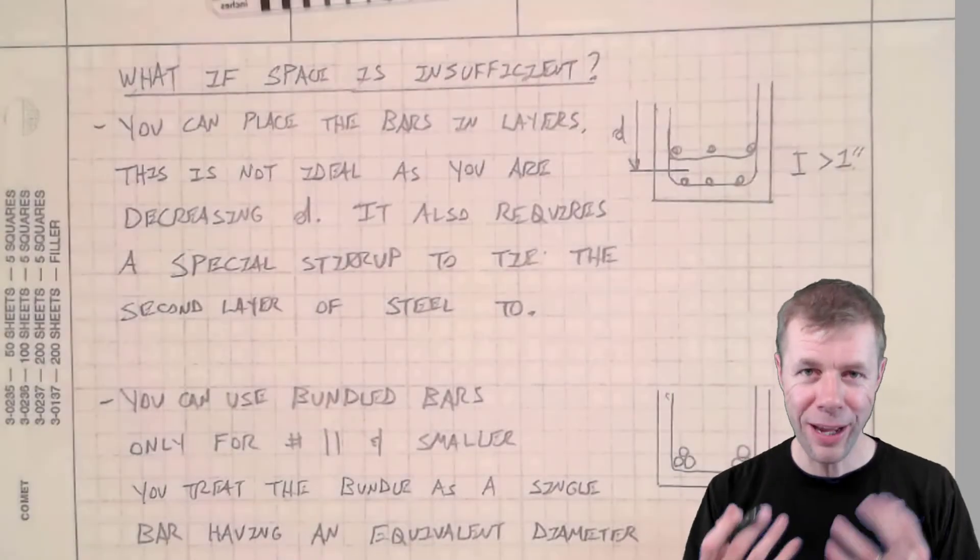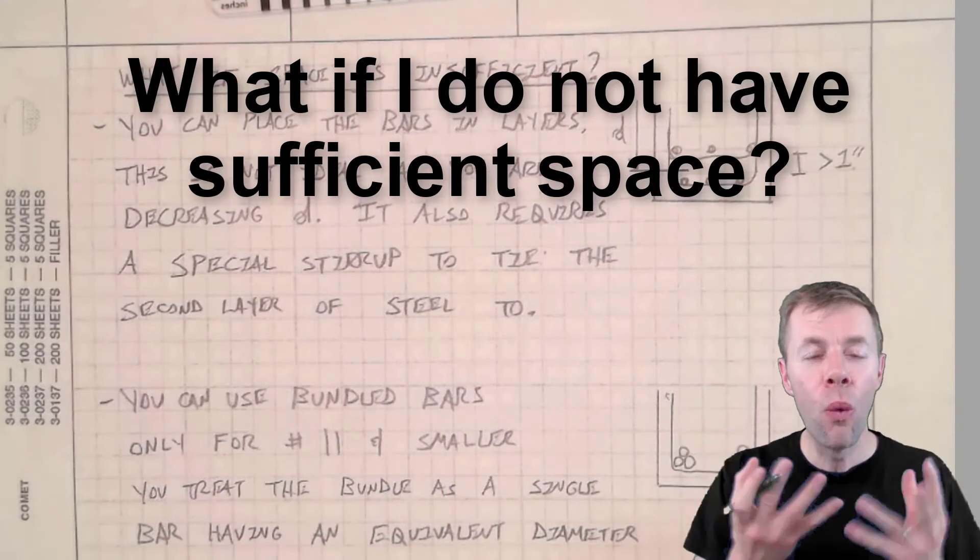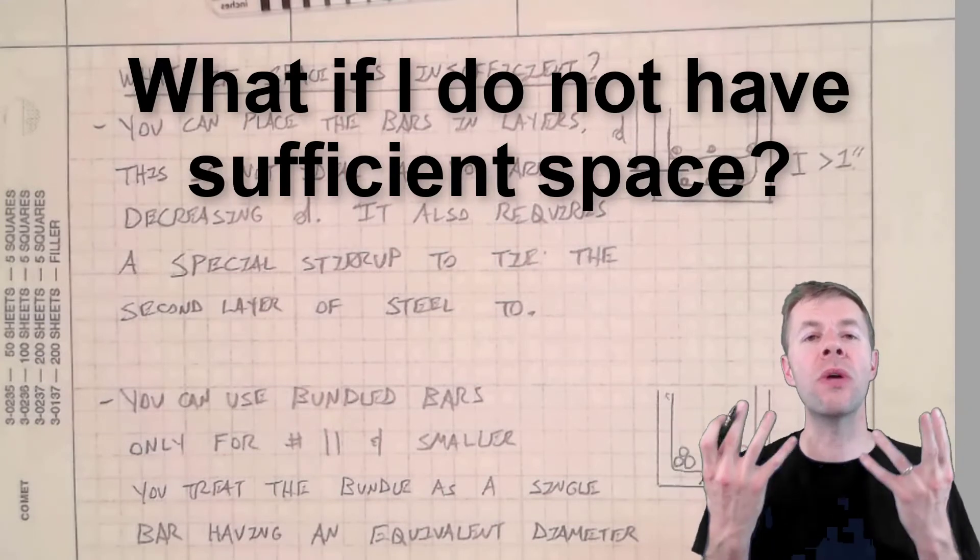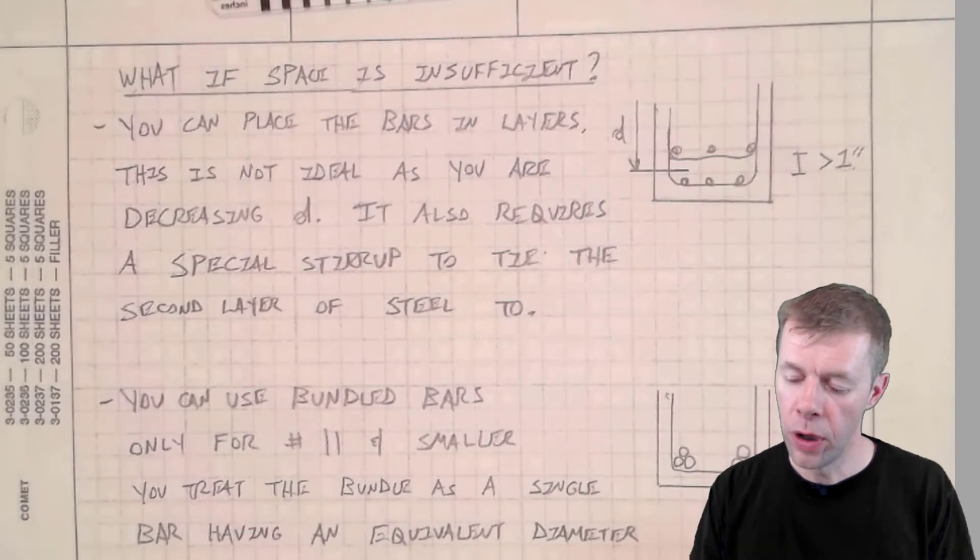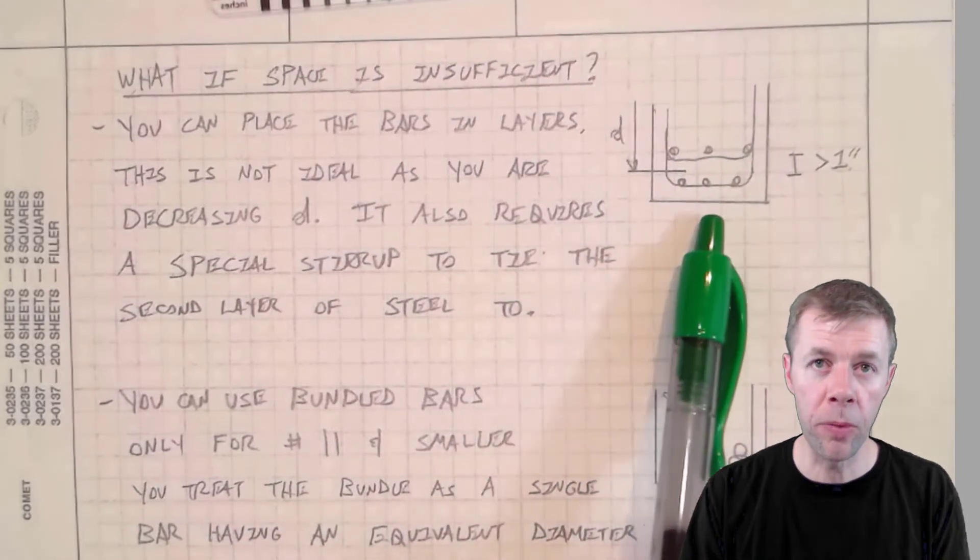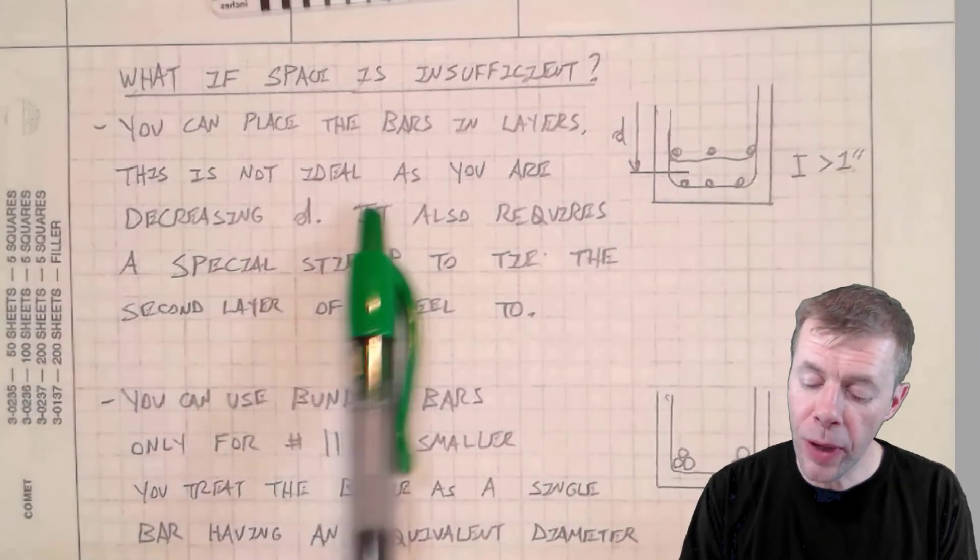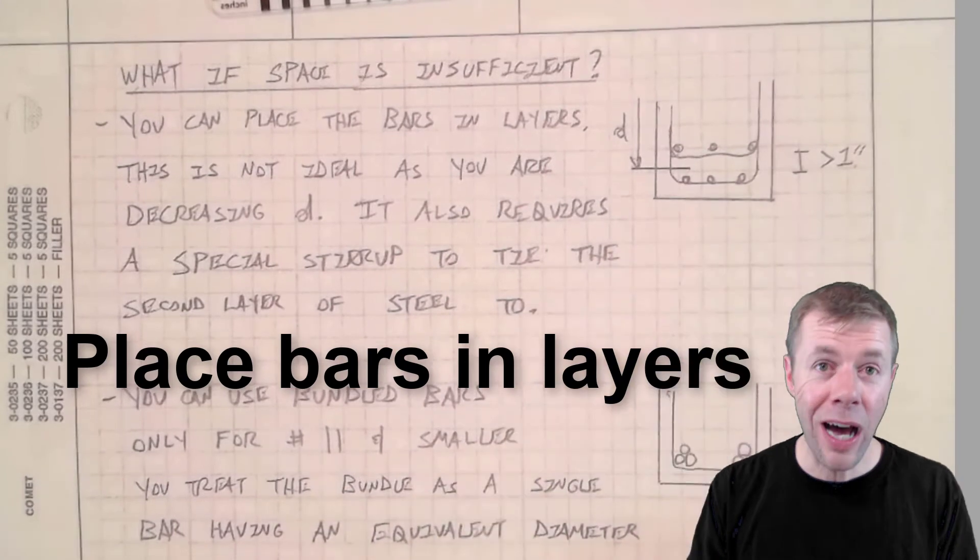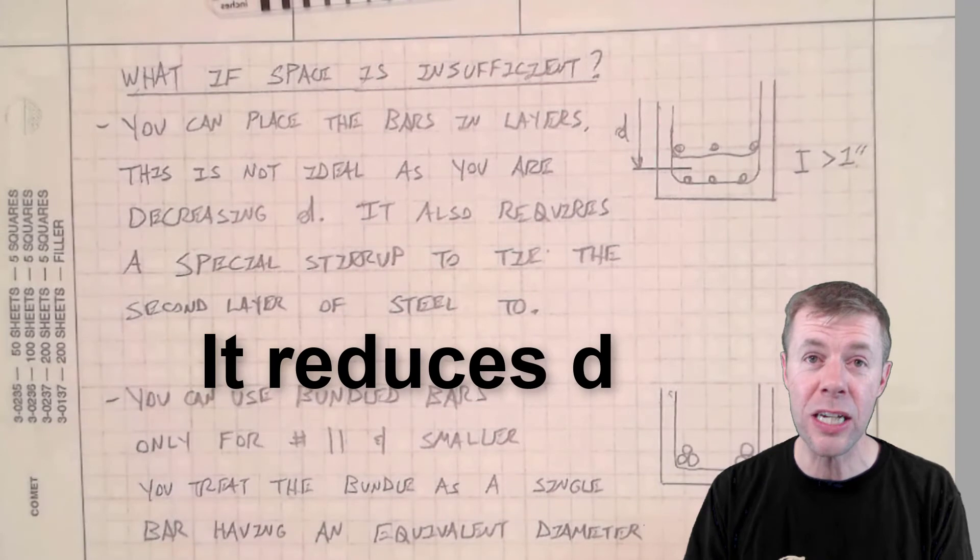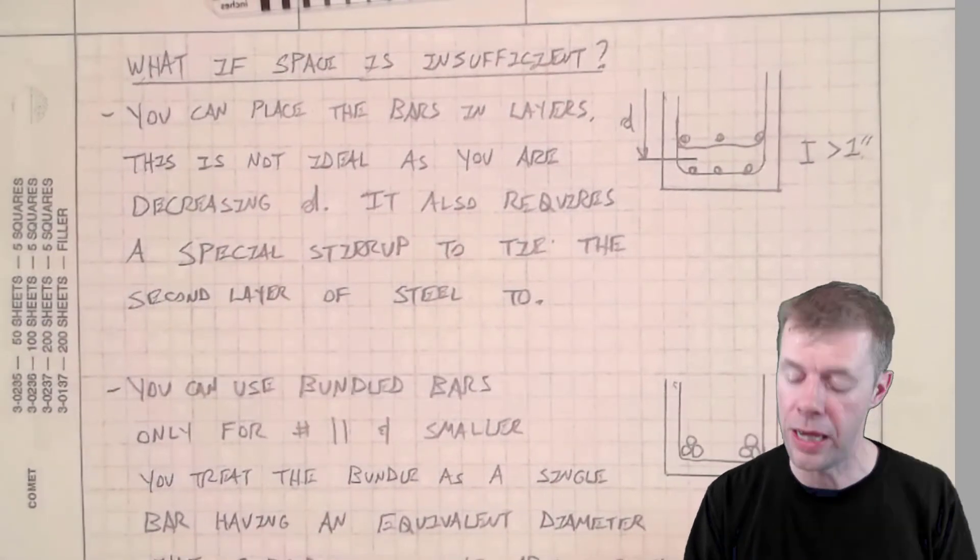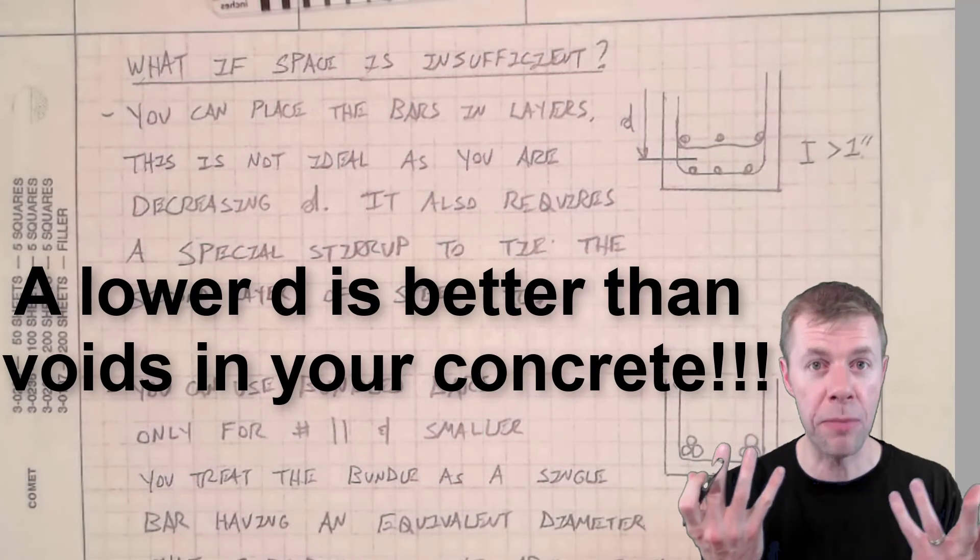You're like, okay, that sounds all right. I don't want honeycombing. But what if I don't have sufficient space? What do I do? Well, if you just have a lot of longitudinal bars, and this will happen sometimes in like T-beams, you can actually place bars in layers. It's not ideal because you're actually decreasing your D a little bit and you'll decrease your capacity a little bit. But it's better than having a bunch of holes because your concrete can't be placed correctly.